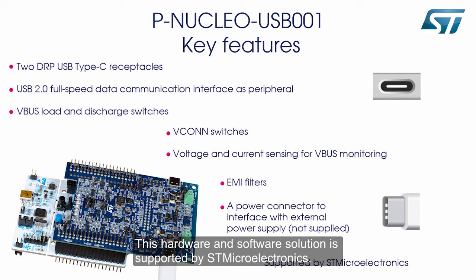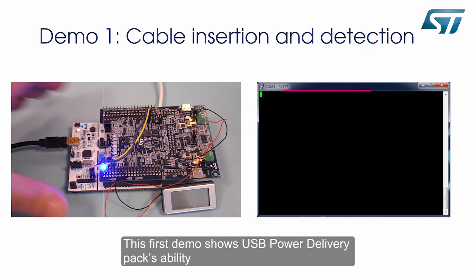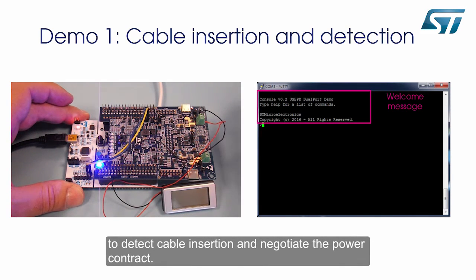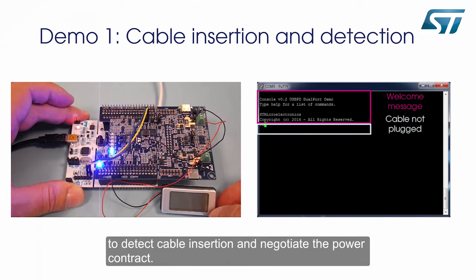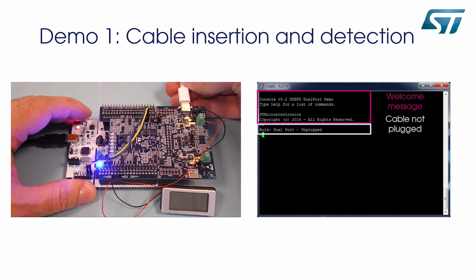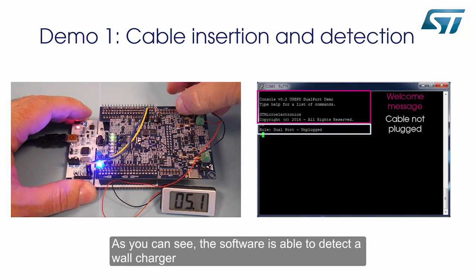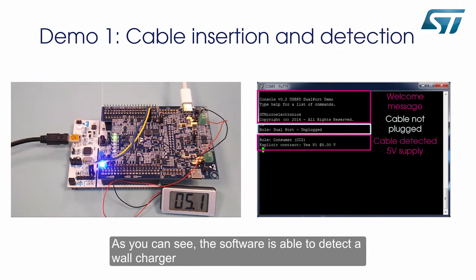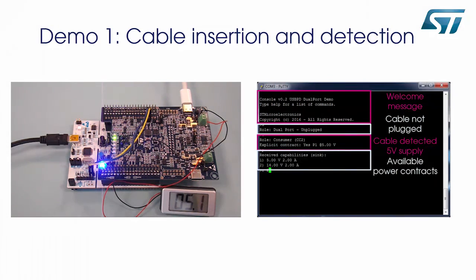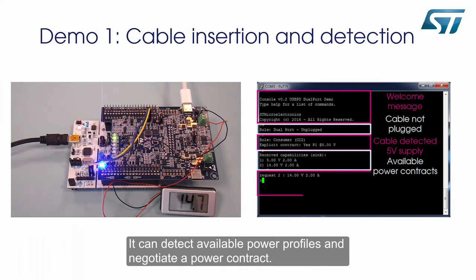This hardware and software solution is supported by STMicroelectronics. This first demo shows the USB Power Delivery Pack's ability to detect cable insertion and negotiate the power contract. As you can see, the software is able to detect a wall charger connected through a USB Type-C cable, and can detect available power profiles and negotiate a power contract.